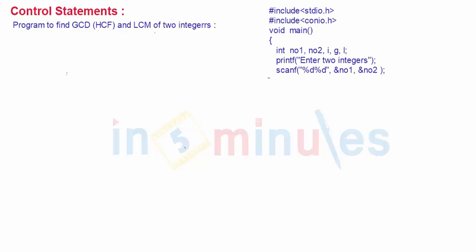So our program will start with normal hash include commands, then two variables, let's say number 1 and number 2 to input the two numbers, then g and l variables to find out GCD and LCM, and i variable we will use for looping as required.